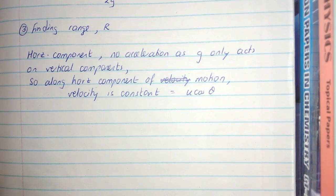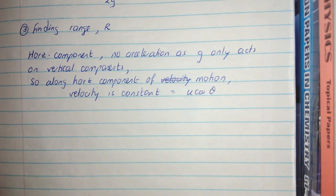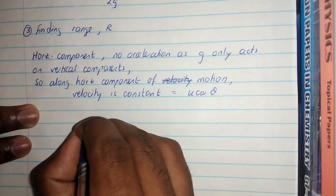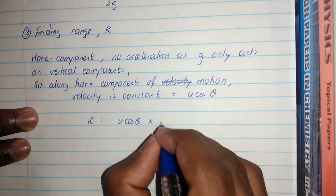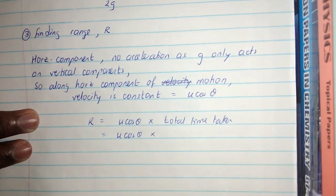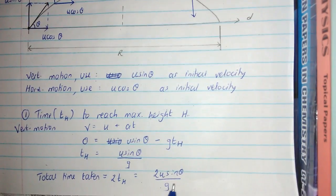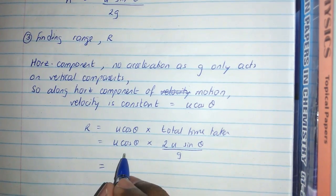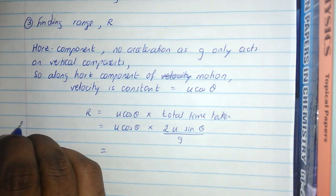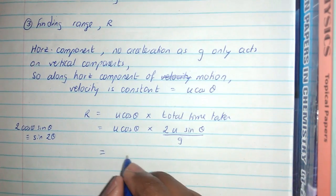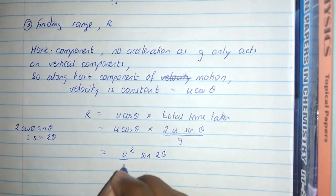For constant horizontal velocity, the distance formula is: distance = velocity × time. So R = u cosθ × total time. The total time is 2u sinθ / g, giving R = u cosθ × 2u sinθ / g. Using the trigonometric identity 2 cosθ sinθ = sin2θ, this simplifies to R = u² sin2θ / g.